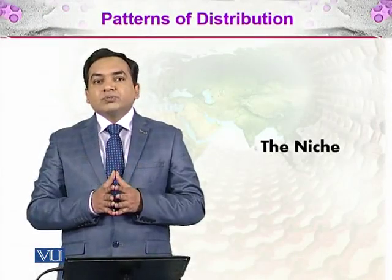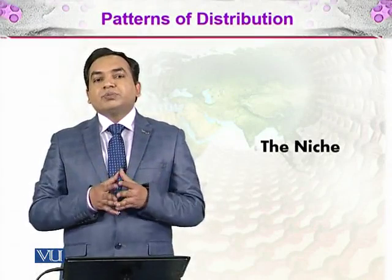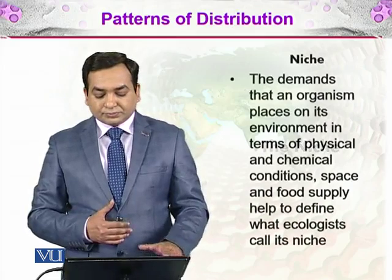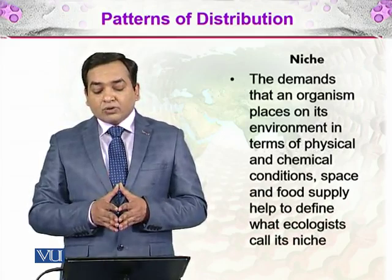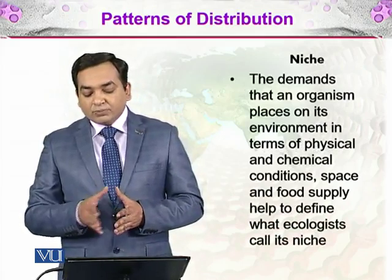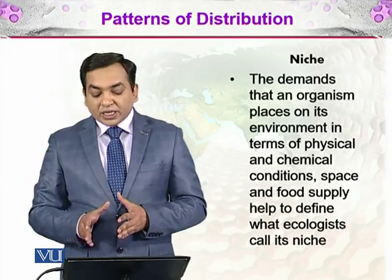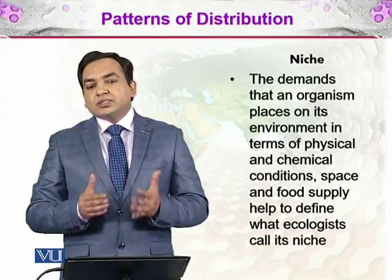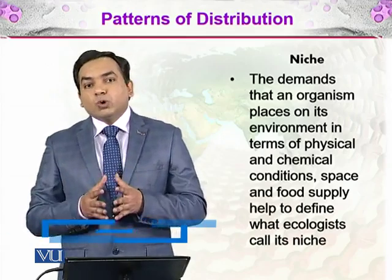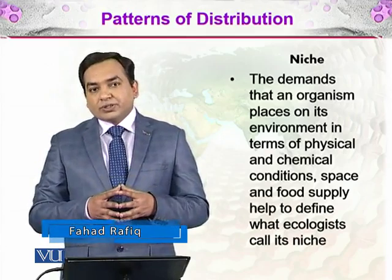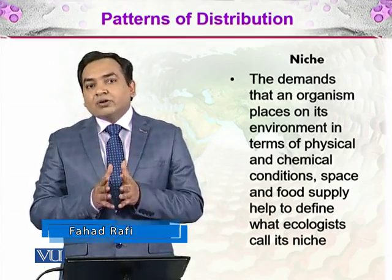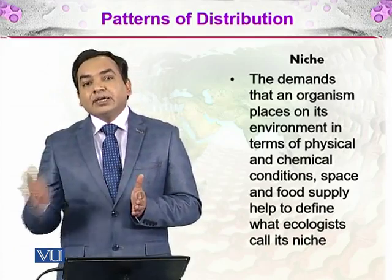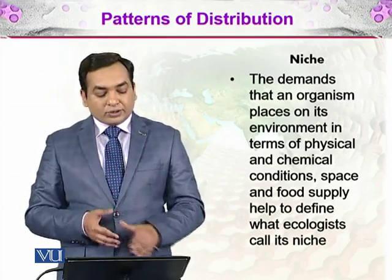In the patterns of distribution of organisms across the planet, we will be discussing the niche and the role of niche in patterns of distribution. The demands that an organism places on its environment in terms of physical and chemical conditions, space and food supply, help to define what ecologists call its niche — the role or place of an organism in an ecosystem, including its requirements from and contributions to the environment.